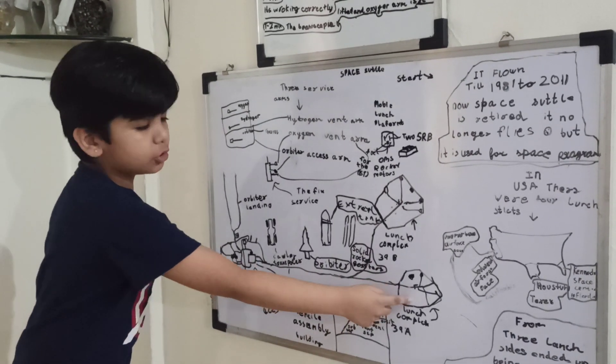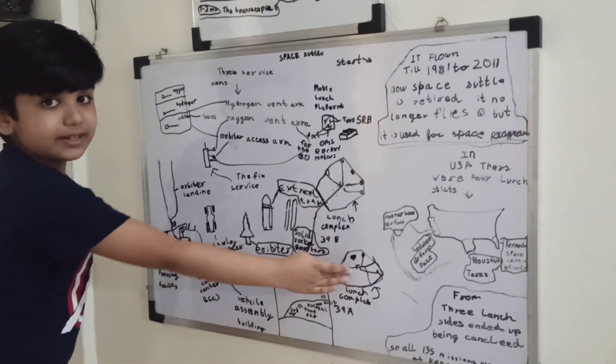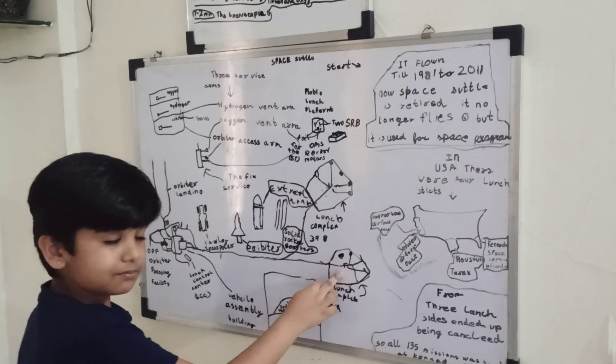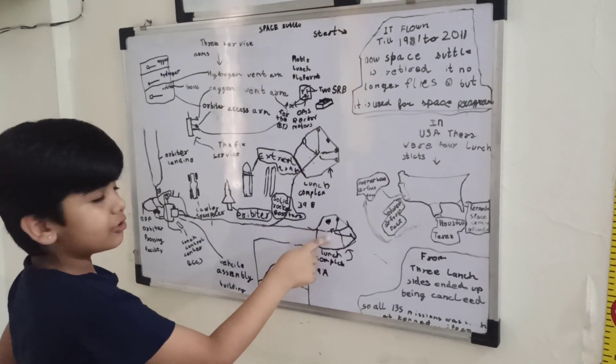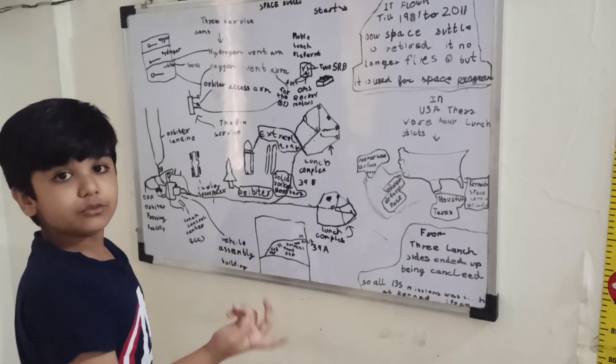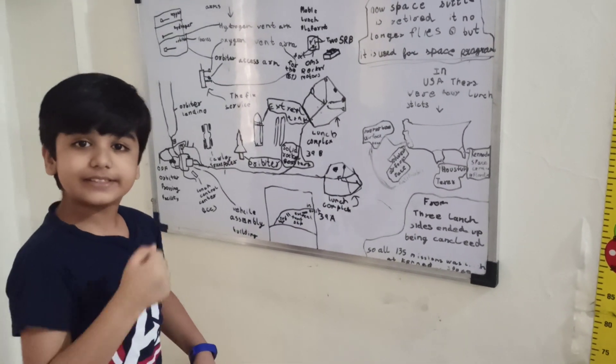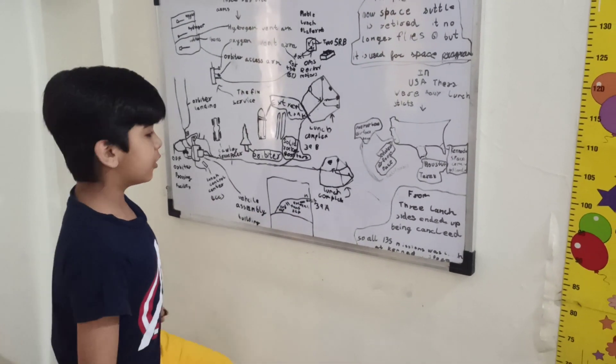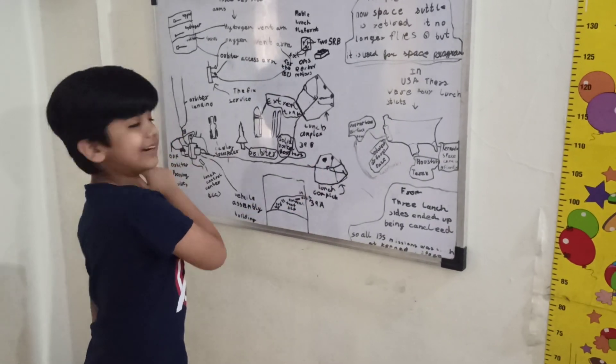The crawler transporter runs at 1.3 kilometers per hour. It takes many hours to reach one of the launch pads, sometimes it can take one single day. When it is in position, the crawler goes back and the platform is kept down on supports, and the crawler goes back down the ramp.